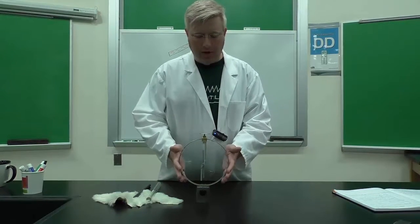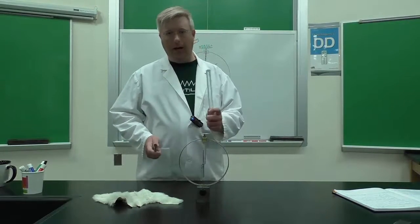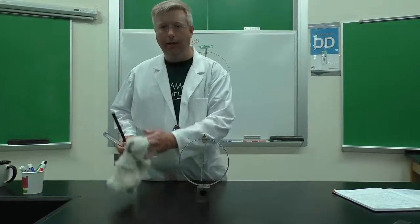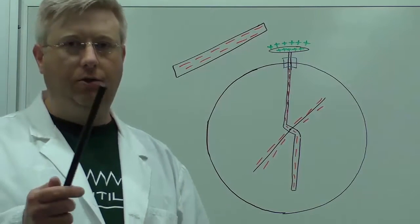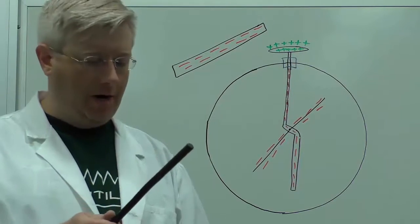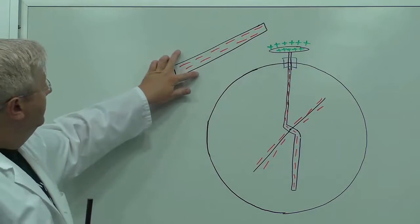This is the Braun electroscope. For this demonstration we're going to use a glass rod, a hard rubber rod, and some fur. The first thing we're going to do is charge up the hard rubber rod with the fur. That'll give it a net negative charge.